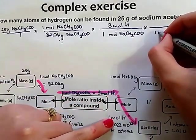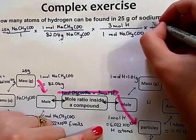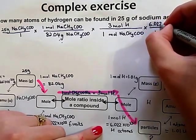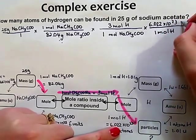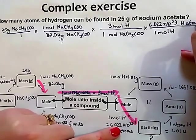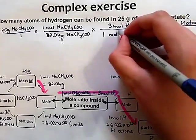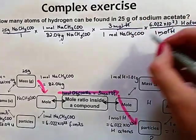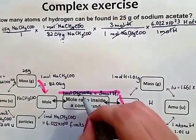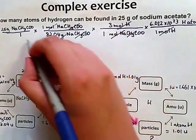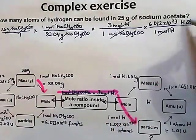1 mole of hydrogen includes Avogadro's number 6.022 times 10 to the 23 hydrogen atoms. Now when we cancel out moles of hydrogen cancel with moles of hydrogen. Moles of sodium acetate cancel out with moles of sodium acetate. Grams of sodium acetate cancel out with grams of sodium acetate. Leaving us an answer in hydrogen atoms.